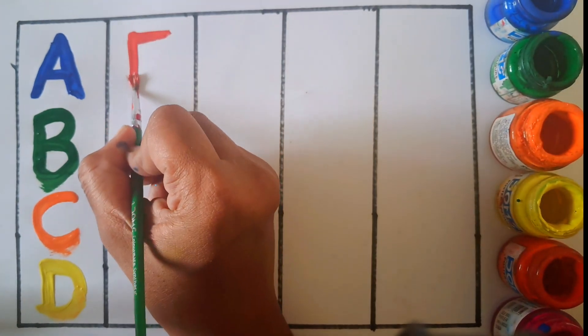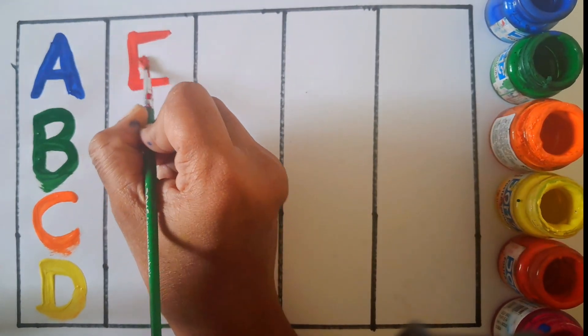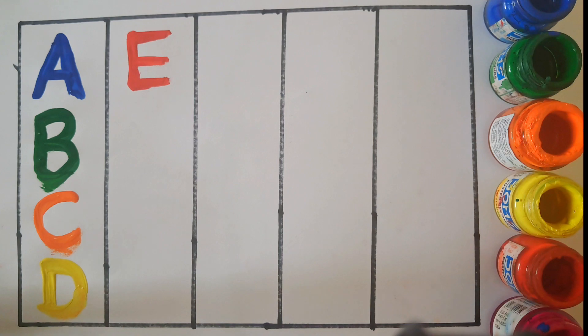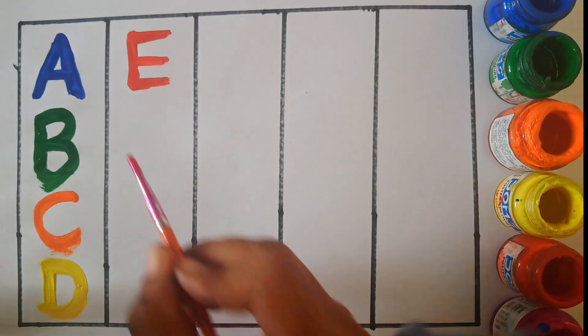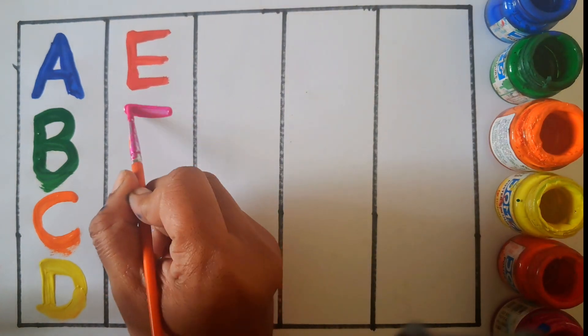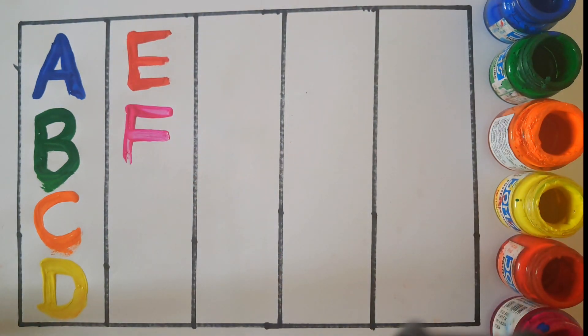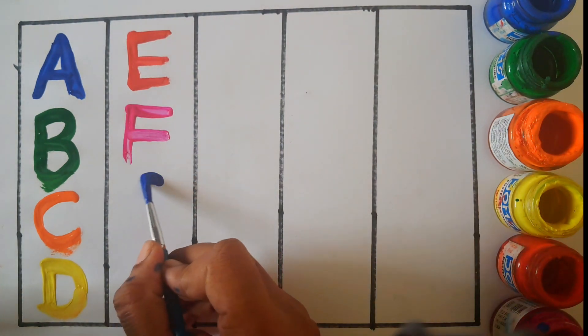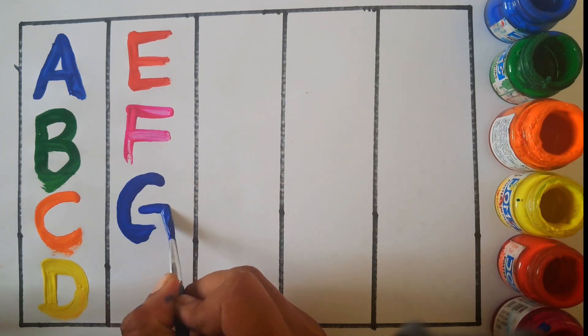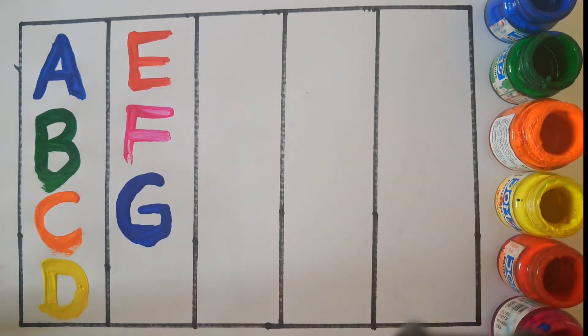E, E for Egg. F, F for Frog. G, G for Good. H, H for Horse.